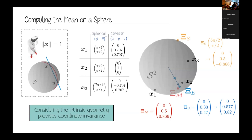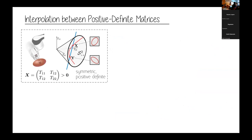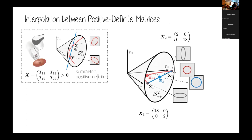Second example: let's move on to the manifold of positive definite matrices. The problem here is that we want to interpolate between positive definite matrices. Examples in robotics include inertia matrices or manipulability ellipsoids. We want to compute the interpolation between two points on the cone of SPD matrices — x1 and x2 — using either a linear Euclidean interpolation shown in blue, or the Riemannian interpolation shown by the red line.